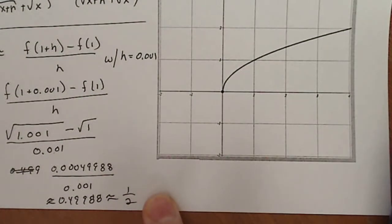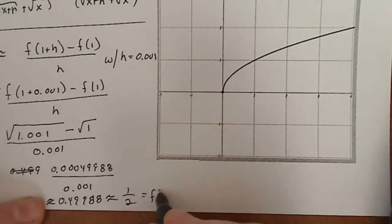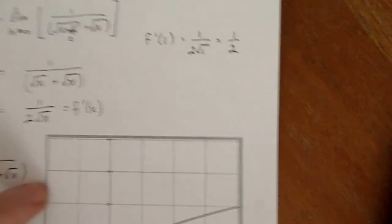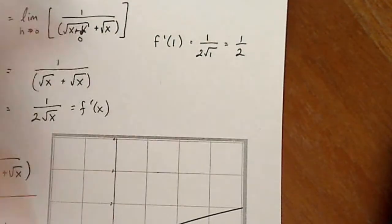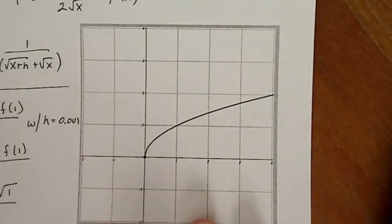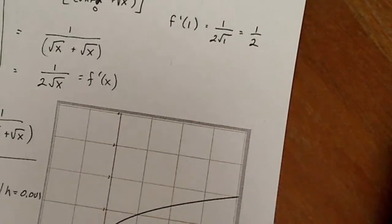0.49988, which to me is pretty close to one half, which I got my f prime of one is about one half here, based on that method. And then f prime of one is one half up here, pretty close. I mean, luckily I'm not getting 17 down here and one half up here. They should be close.